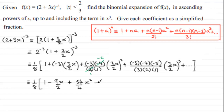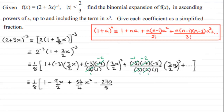The x³ term is negative. We can cancel: the 3 with the −3 gives −1, and the 2 cancels into −4 giving −2. So we have 3³ = 27, multiplied by (−2)×(−5) = 10, giving 270 over 2³ = 8, so 270/8 × x³.